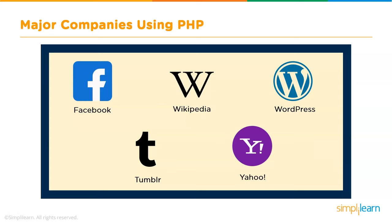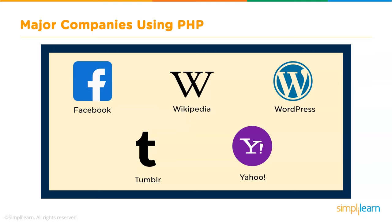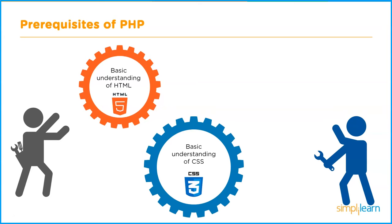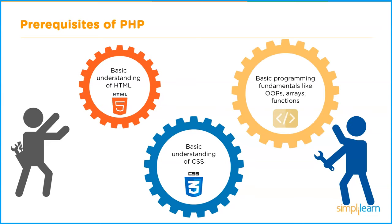Now let us look at some prerequisites for learning PHP. Since PHP scripts are embedded into HTML code, a basic understanding of HTML is a natural prerequisite. A website also cannot be complete without CSS, so a basic understanding of CSS is a must. Next is basic knowledge of a programming language — while not strictly required, if you have basic knowledge of programming fundamentals such as OOP concepts, functions, and arrays, it will really help you along the way.